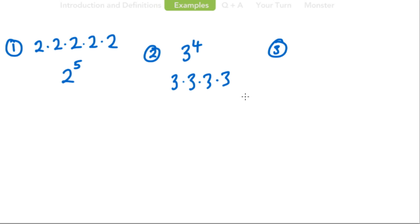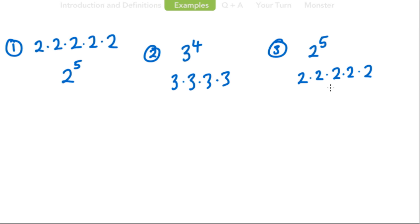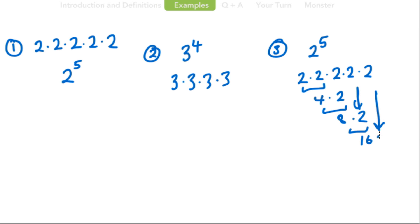Number 3: you might be asked to write something in standard form. If asked to find standard form without a calculator, you would probably first write it in factor form, then start multiplying. 2 times 2 is 4, times another 2 gives you 8, times 2 gives you 16, and then don't forget the last 2 — that gives you 32. So 2 to the 5th power equals 32.